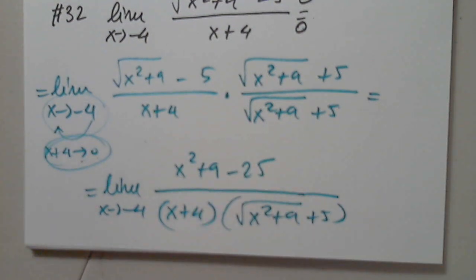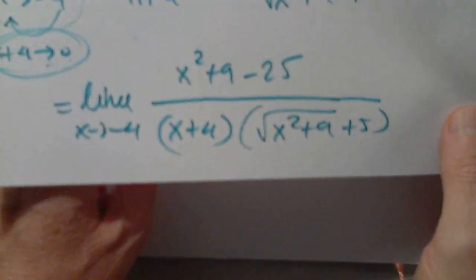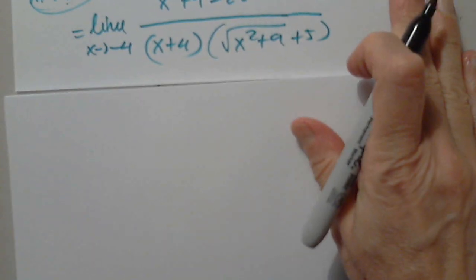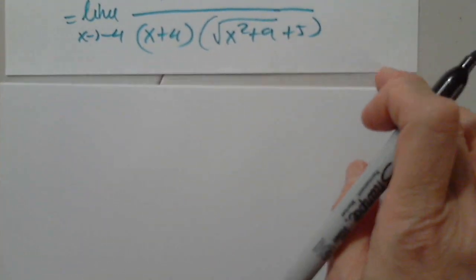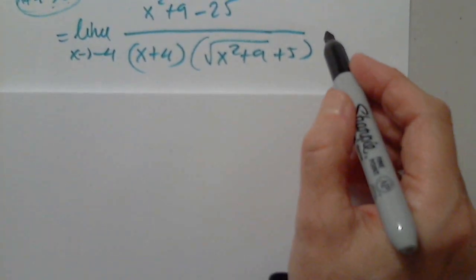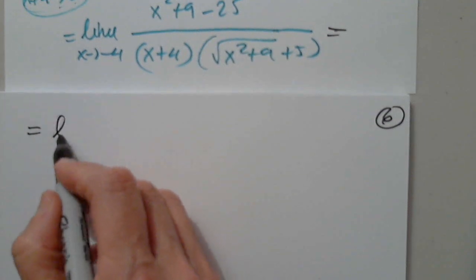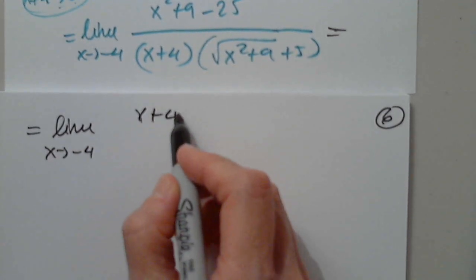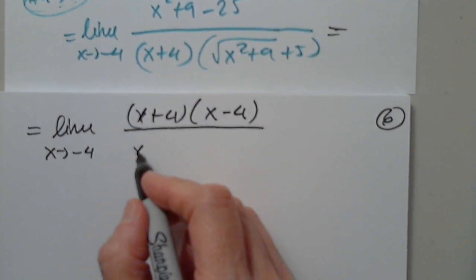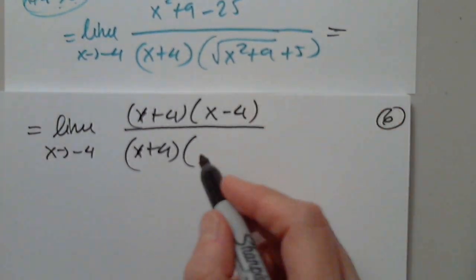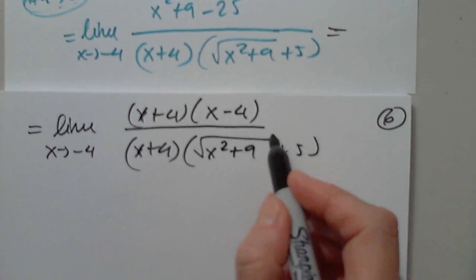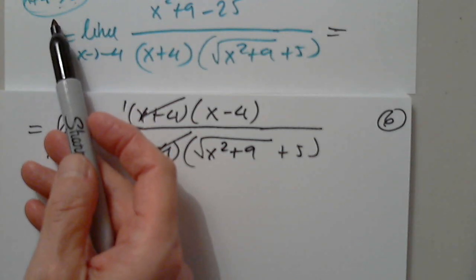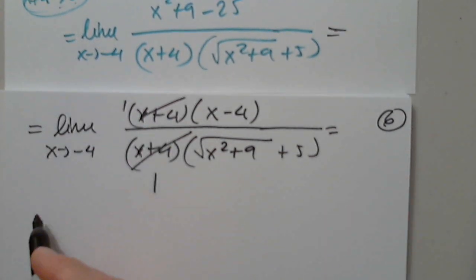When we look at the numerator, it becomes x squared minus 16 as we expected. So then we can factor: limit as x approaches negative 4 of x squared minus 16, which turns into x plus 4 times x minus 4, over x plus 4 times the square root of x squared plus 9 plus 5. This is my target — the x plus 4 to go away. I can make it go away, and now the limit is fine.